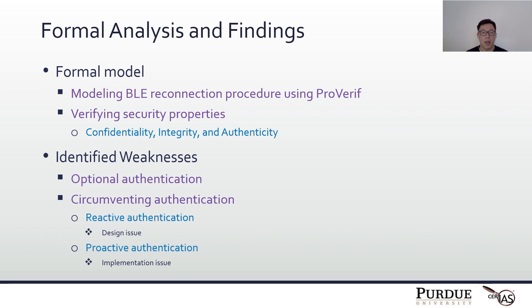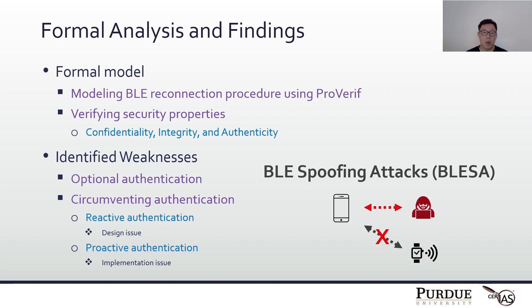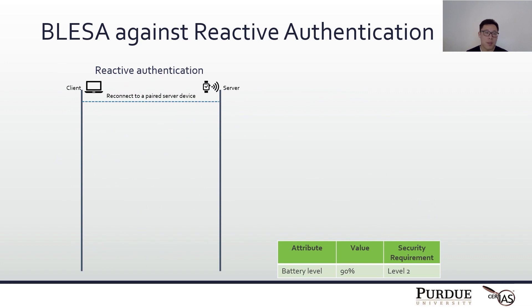Based on these weaknesses, we propose BLISA — a BLE spoofing attack that can attack paired devices. We will introduce how BLISA can attack reactive and proactive authentication one by one. Let's first see how reactive authentication works, and then I'll show how BLISA can attack it.